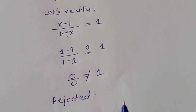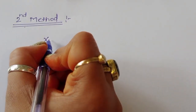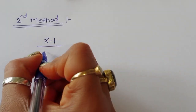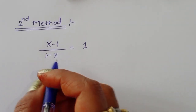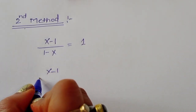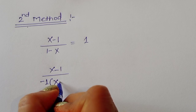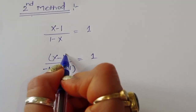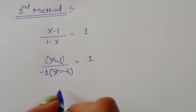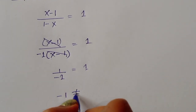Now solving using a second method. The question is (x-1)/(1-x) = 1. We can rewrite the denominator by taking minus 1 as a common factor: 1 minus x equals minus 1 times (x minus 1). So we have (x minus 1) divided by minus 1 times (x minus 1) equals 1. Cancelling (x minus 1) from numerator and denominator gives 1 divided by minus 1, which is minus 1.